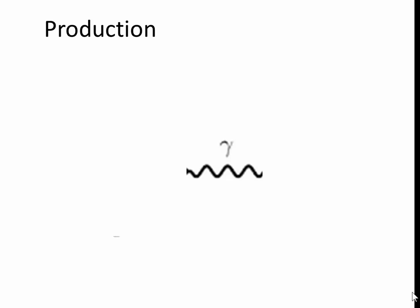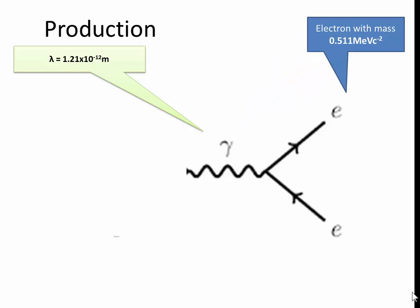What about pair production? We have a photon which basically decays into an electron and an anti-electron. The wavelength is 1.21 times 10 to minus 12. And it produces two masses of 0.511 MeVc to minus 2.